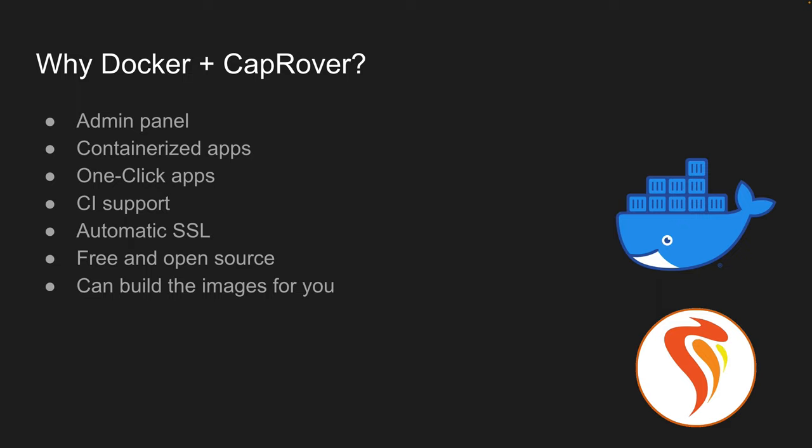So why would we specifically want to use Docker and CapRover for this? Developers are familiar with CLI tools, but sometimes it's quite nice to have an admin panel where you can see the status of your apps, see logs, add environment variables — and CapRover provides that. Docker lets us containerize apps so each app is packaged in a container, works independently, and is protected so that even if something happened inside one container it wouldn't affect others on the same machine.